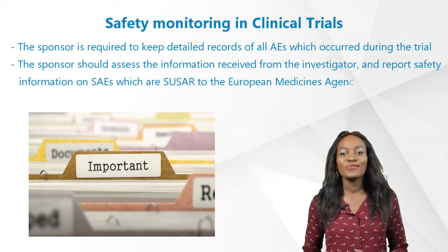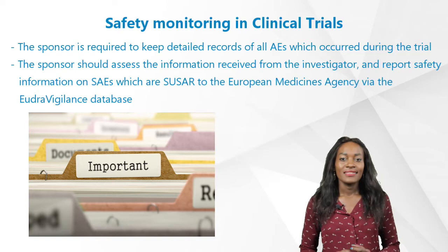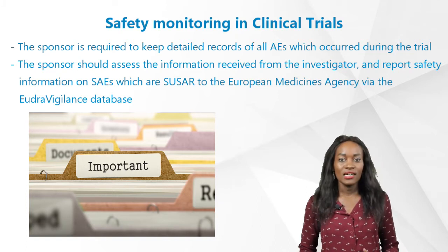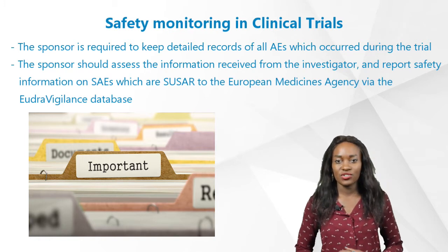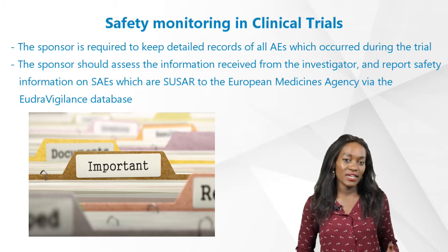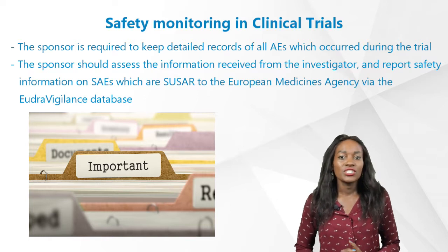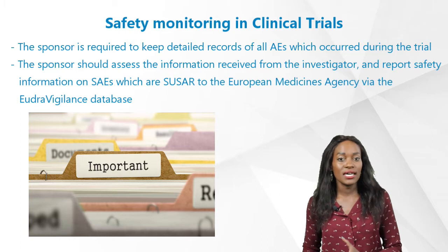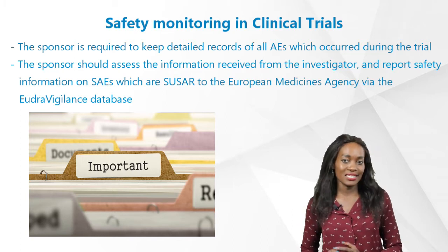Let's move on to the responsibilities of a sponsor in safety reporting. The sponsor is required to keep detailed records of all AEs which occur during the clinical trial of which they have been notified by the investigators. The sponsor should assess the information received from the investigator and report safety information on SAEs which are suspected, unexpected, serious adverse reactions to the European Medicines Agency via the EudraVigilance database.